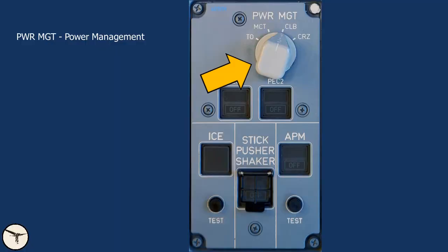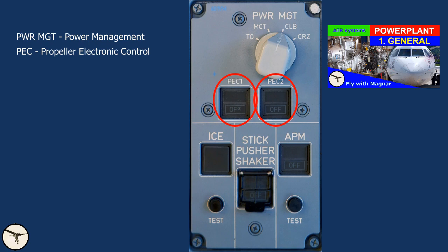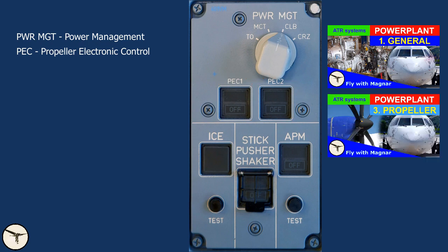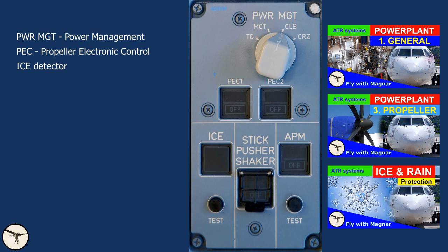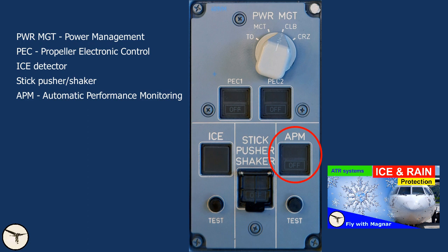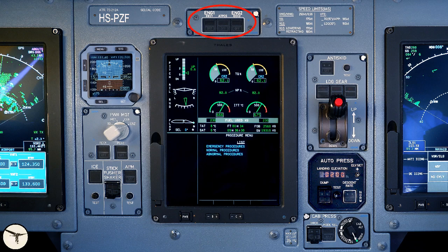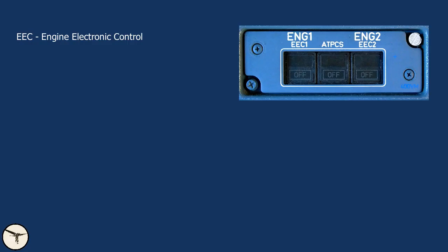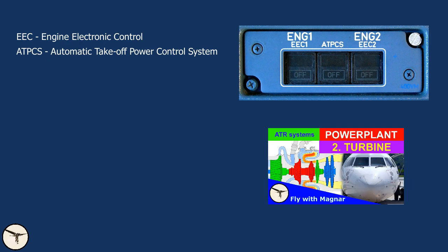Below is the power management selector and controls for the PEC, propeller electronic control — they are described in a separate video. Further down we have controls for an IESI deice system and a test push button. The stick pusher and shaker push button is used to deselect the system if the checklist calls for it; otherwise it remains on. The APM is part of the stall protection system and is described in that video. Here we also have controls for the EEC, engine electronic control, and the ATPCS, automatic take-off power control system.